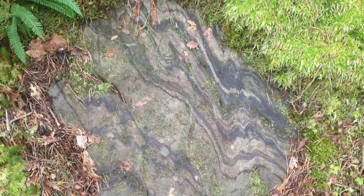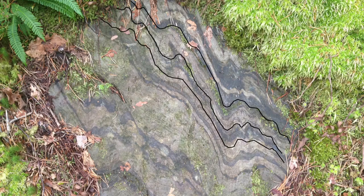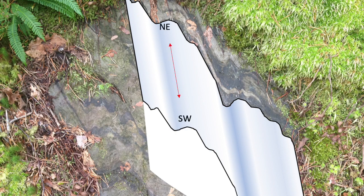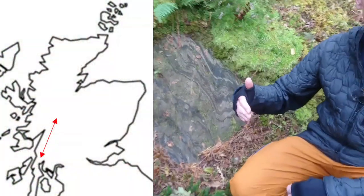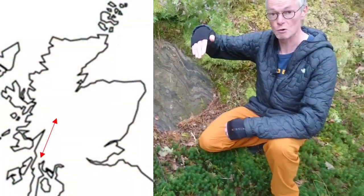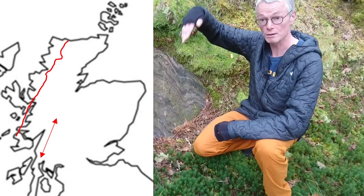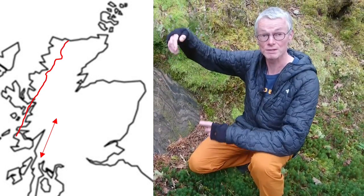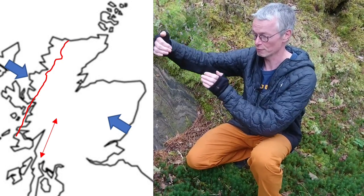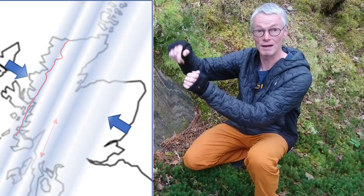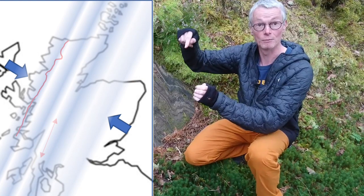We're looking pretty much end on to the folds. The folds are coming in here and the axes are coming out towards you, oriented north-east to south-west. That's the same orientation as the Moine Thrust — north-east to south-west — and the fold axes all run parallel to the Moine.